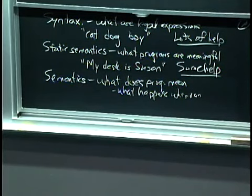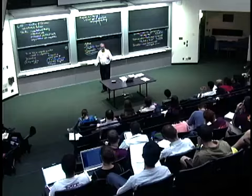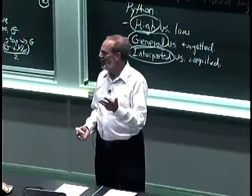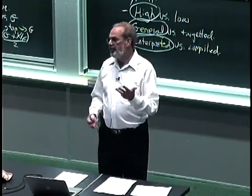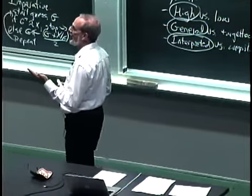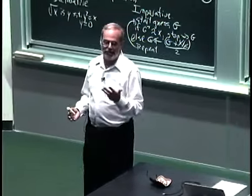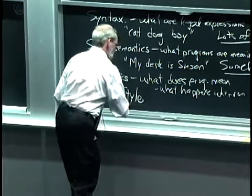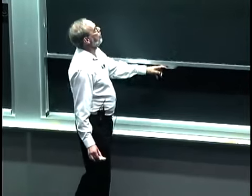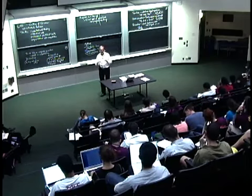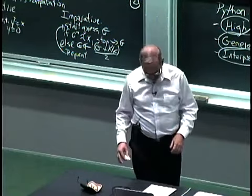If something is both syntactically correct and appears to have correct static semantics and you run it, it could give you the right answer, could crash, or could loop forever. You can't always tell whether something is stuck in an infinite loop or simply taking a long time to compute. To deal with this, you need to develop good programming style — writing in a way that makes it easy to spot the places where semantic bugs occur.